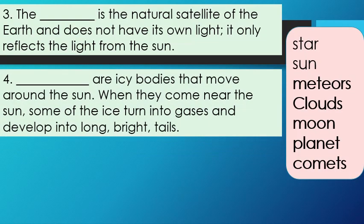Number 4: Blank are icy bodies that move around the sun. When they come near the sun, some of the ice turn into gases and develop into long bright tails.